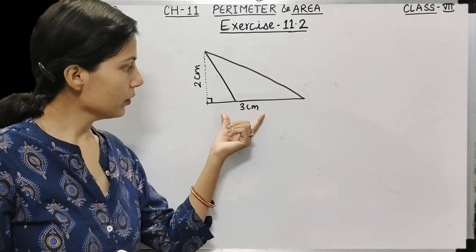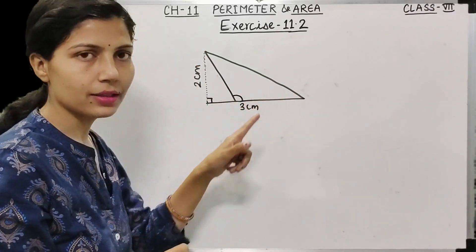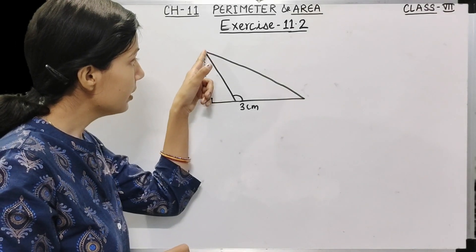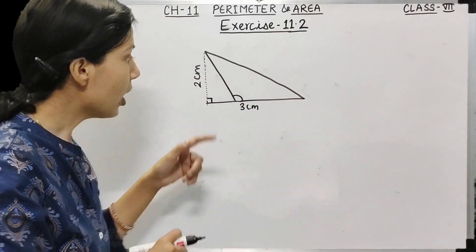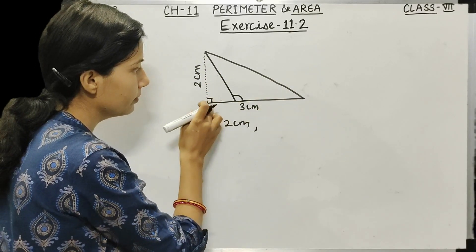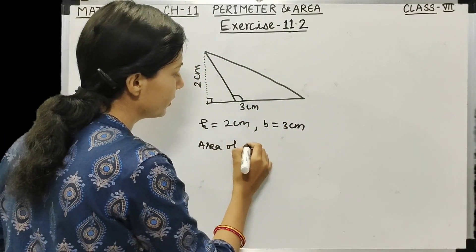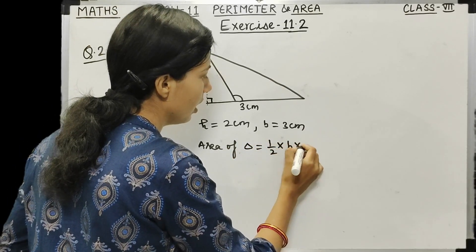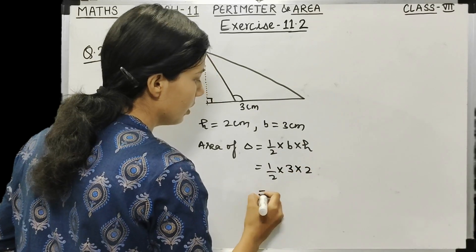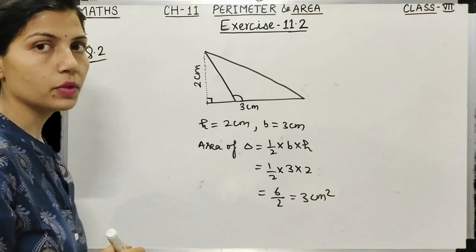The last figure is an obtuse-angle triangle. In an obtuse-angle triangle, the height falls outside the triangle. Height is 2 cm and the corresponding base is 3 cm. Area = ½ × base × height = ½ × 3 × 2 = 6/2 = 3 cm².